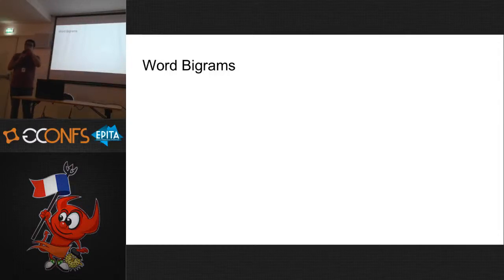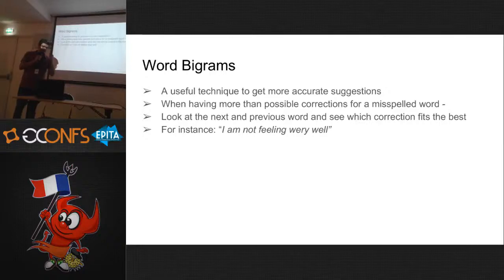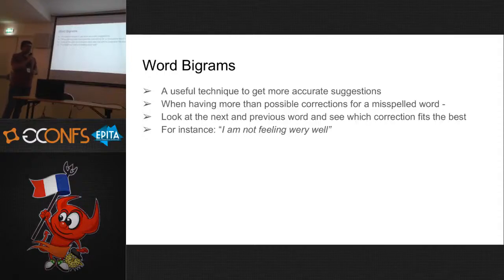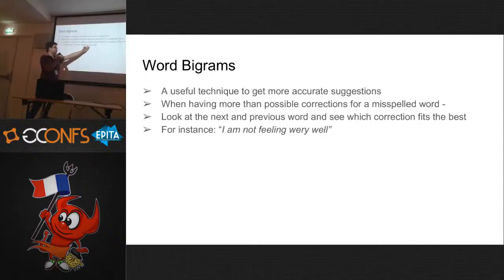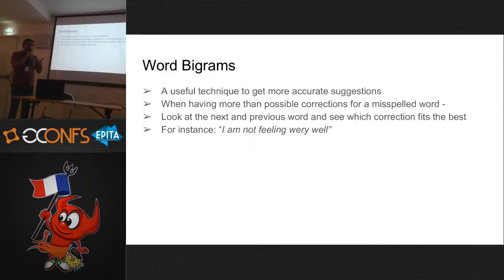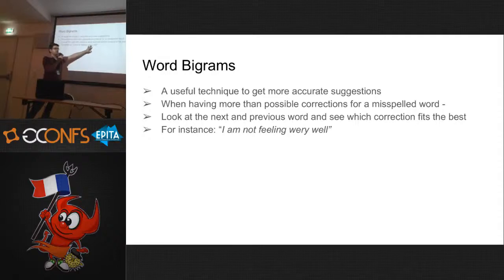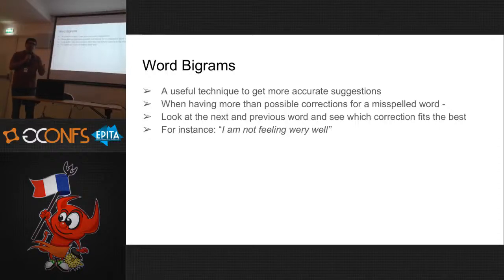Once we have these possible corrections for a misspelled word, we need to figure out which are the most likely ones. As described previously, we can use bigrams or trigrams to look at surrounding words. For example, in the sentence 'I am not feeling very well', if 'very' is misspelled as 'WERY', I might get two corrections: 'weary' and 'very'. Both are valid words, but comparing bigrams, 'very well' is much more likely than 'weary well'. This is a technique to filter down the list of possible corrections.